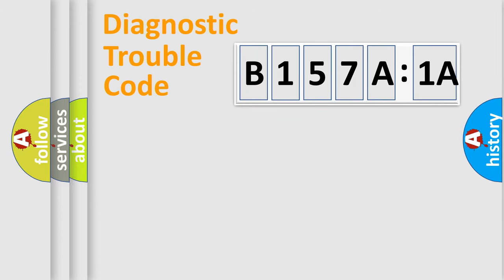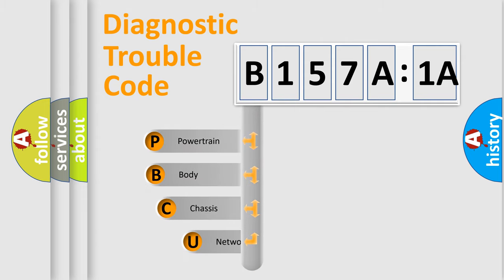Powertrain, Body, Chassis, Network. This distribution is defined in the first character code.